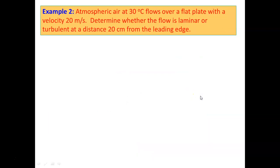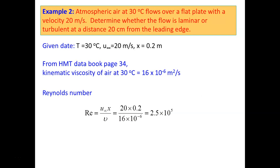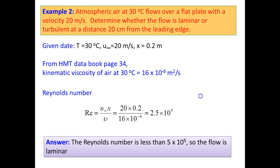Example 2: Atmospheric air at 30°C flows over a flat plate with a velocity of 20 m/s. Determine whether the flow is laminar or turbulent at a distance of 20 cm from the leading edge. Given: T = 30°C, U∞ = 20 m/s, x = 0.2 m. From the heat and mass transfer data book page 34, the kinematic viscosity of air at 30°C is ν = 16×10⁻⁶ m²/s. Reynolds number = (20 × 0.2) / (16×10⁻⁶) = 2.5×10⁵. Since Re < 5×10⁵, the flow is laminar.